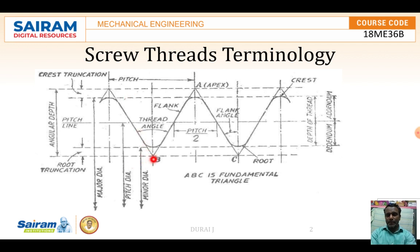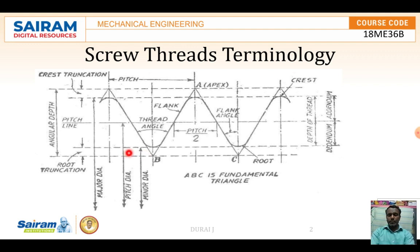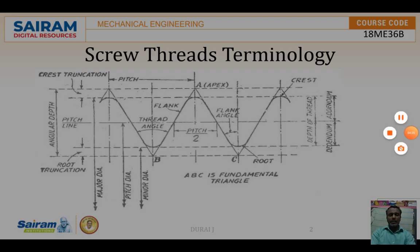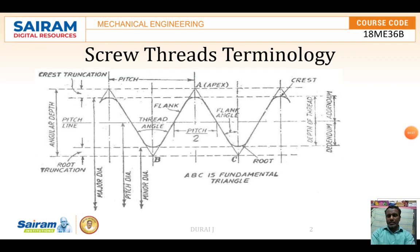Similarly, from point B of the fundamental triangle to the root area, whatever distance is placed, that is called the root truncation — the radial distance from the root to the nearest apex of the fundamental triangle.